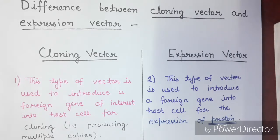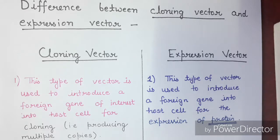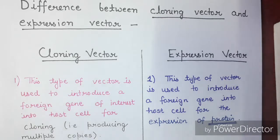Hello friends, today we are going to deal with the difference between cloning vector and expression vector. Cloning vector is a type of vector that is used to introduce a foreign gene of interest into the host cell for cloning purpose. That's why it is called a cloning vector — because it is used to produce multiple copies of the desired gene.